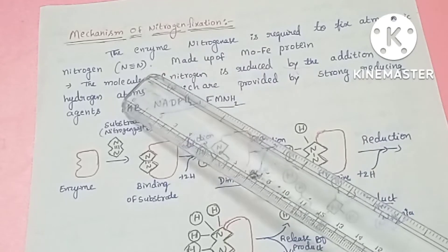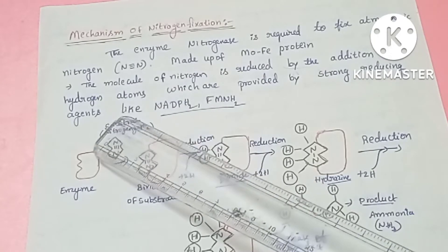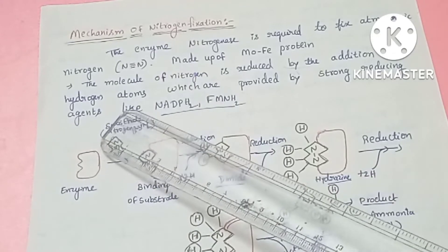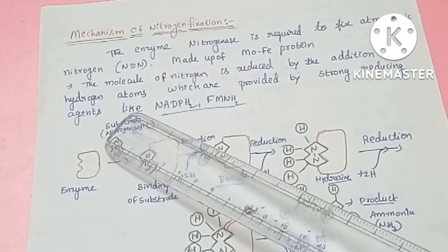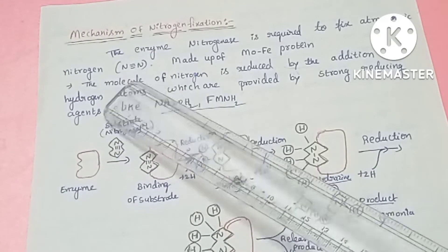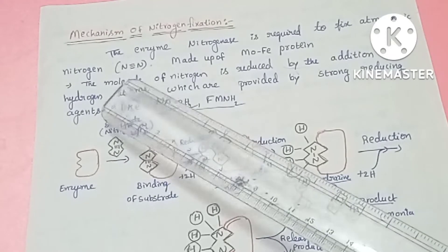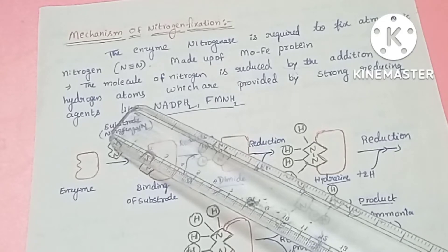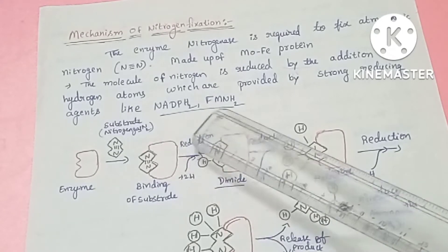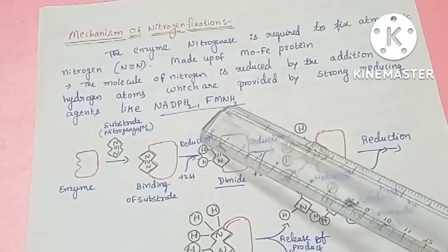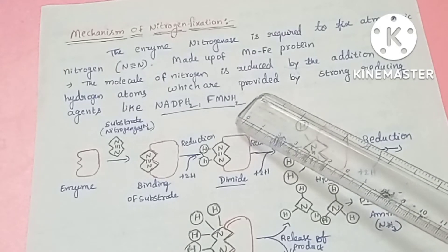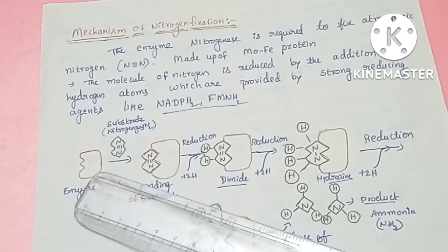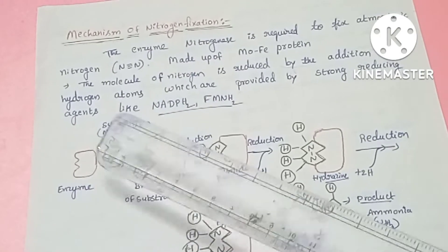Nitrogen is converted to ammonia by reduction. The reduction process involves the addition of hydrogen atoms. When hydrogen atoms are added sequentially, the elemental form of nitrogen is reduced. These hydrogen atoms are provided by reducing agents NADPH₂ and FMNH₂. Now, look at this picture.